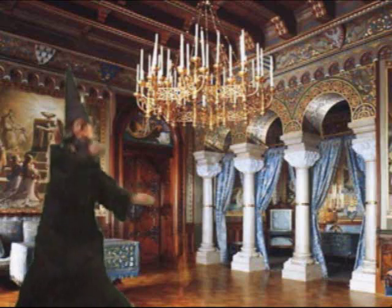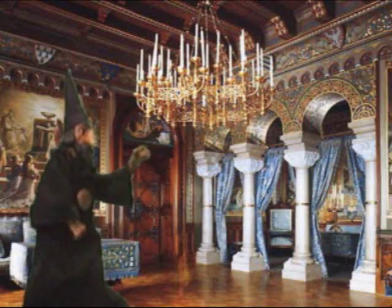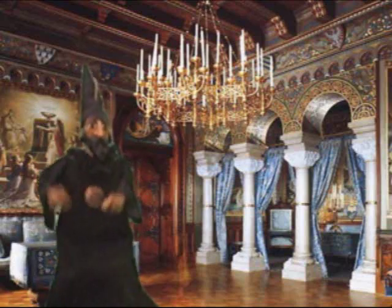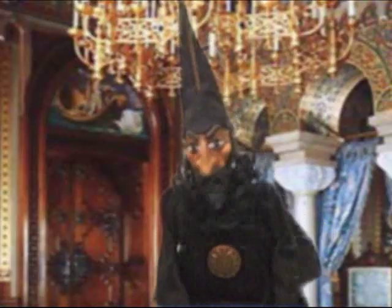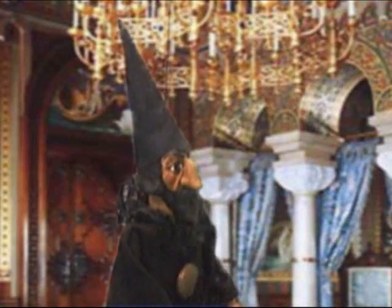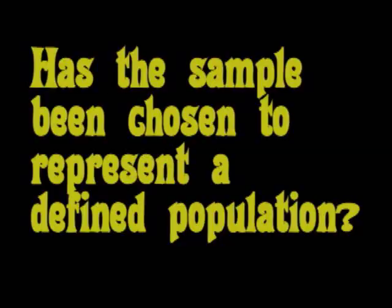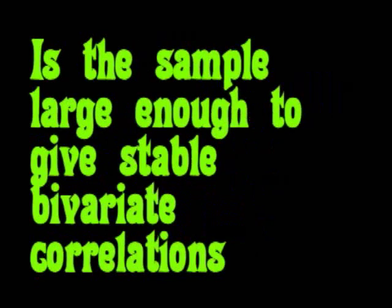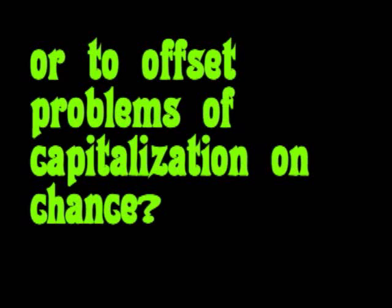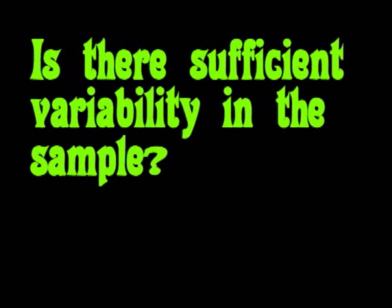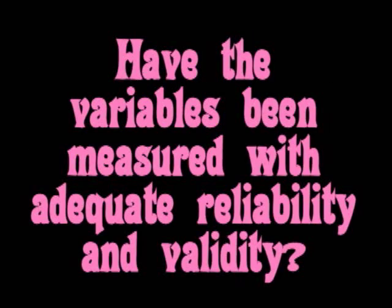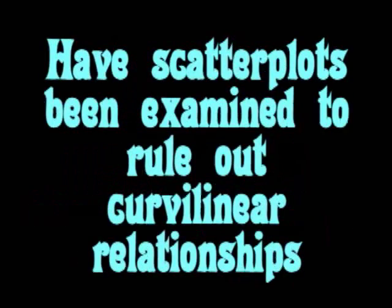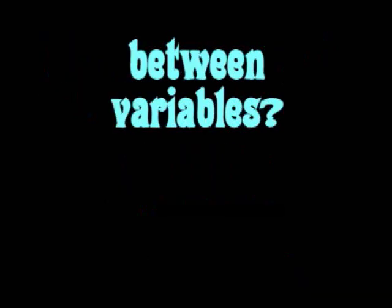You might now have an understanding of the advantages and disadvantages of the correlational study. During this class, you'll be asked to read a variety of studies, and some will be correlational. There are things you need to consider when reading those studies. Number one: has the sample been chosen to represent a defined population, or have the characteristics of the sample been defined so that one can make a generalization? Number two: is the sample large enough to give stable bivariate correlations, or to offset problems of capitalization on chance? Is there sufficient variability in the sample? Number three: have the variables been measured with adequate reliability and validity? Number four: have scatter plots been examined to rule out curvilinear relationships between variables?